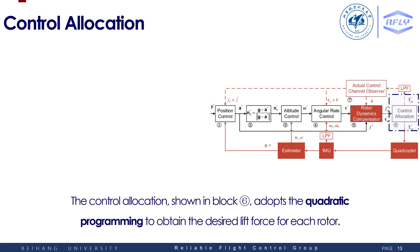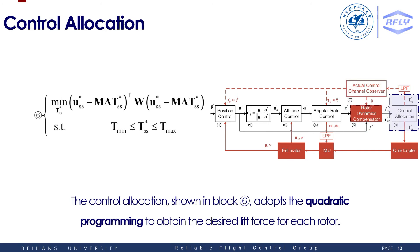The control allocation shown in block six adopts quadratic programming to obtain the desired lift force for each rotor.